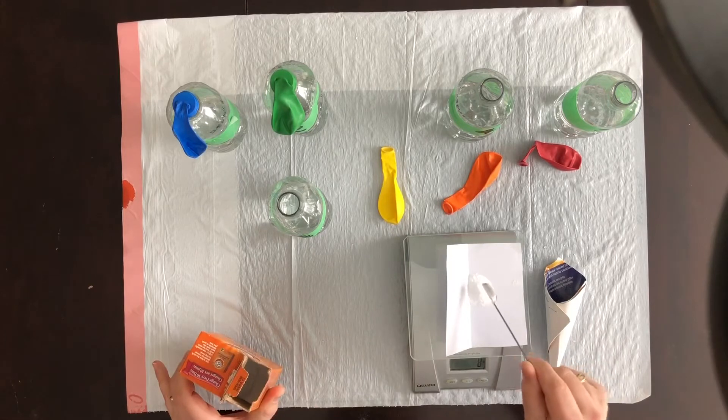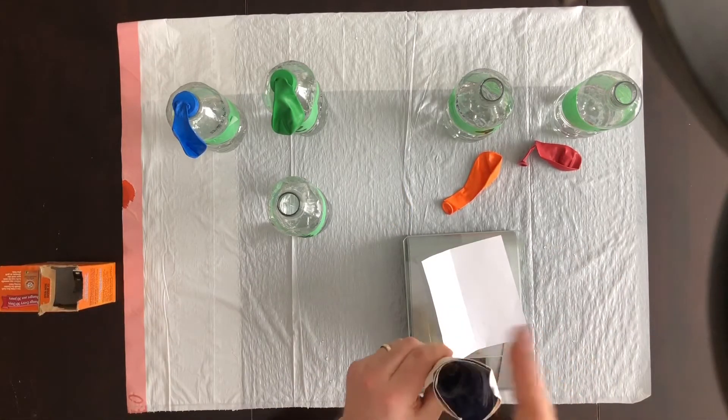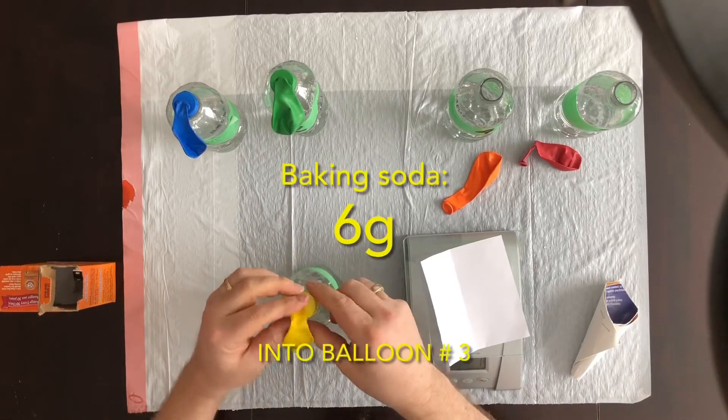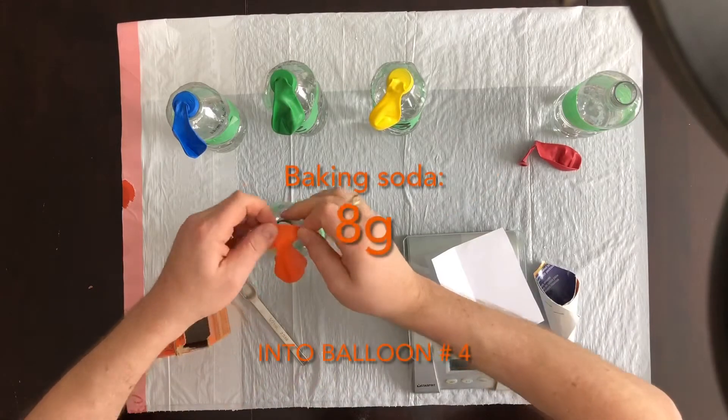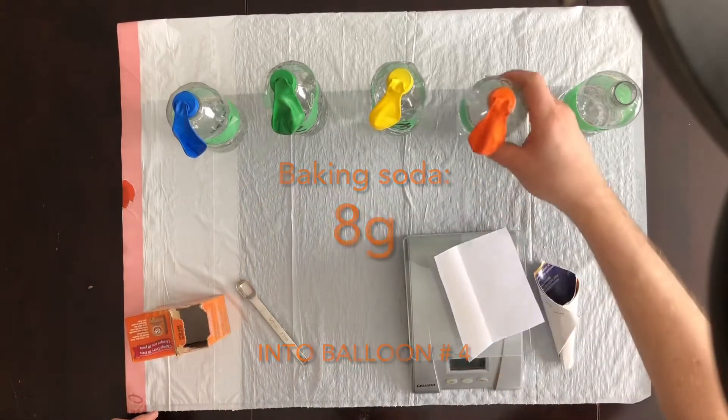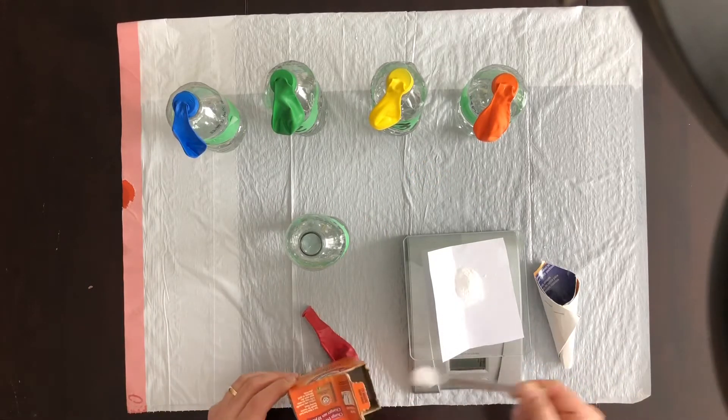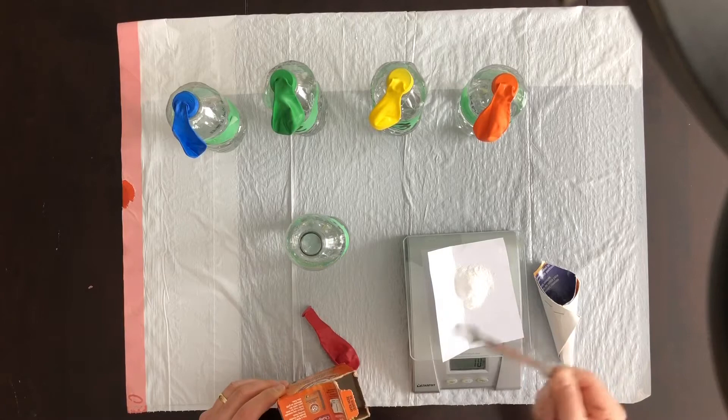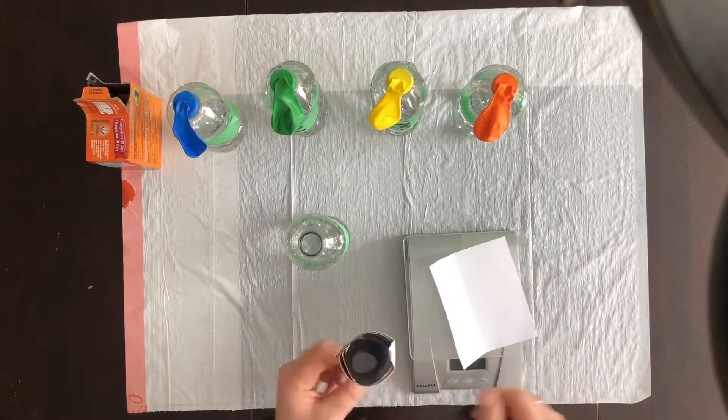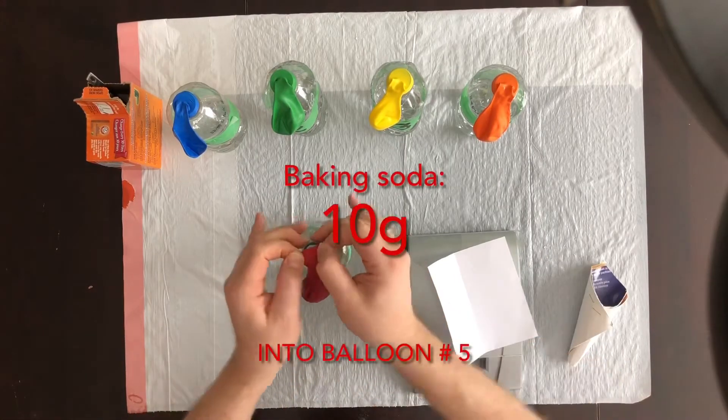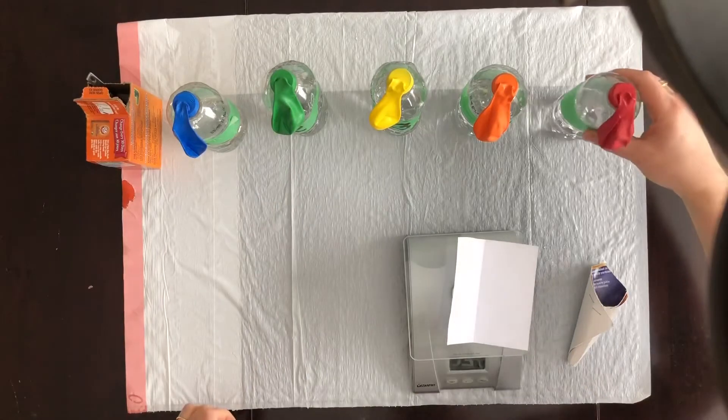Now, if you've been watching, you'll notice that each bottle gets a different amount of baking soda. Bottle number one with the blue balloon gets two grams of baking soda. Bottle number two with the green balloon gets four. Bottle three with the yellow balloon gets six. Bottle four with the orange balloon gets eight grams of baking soda. And the last bottle, the red one, gets 10 grams of baking soda. Remember that the baking soda is in the head of the balloon and it's not yet falling into the vinegar.